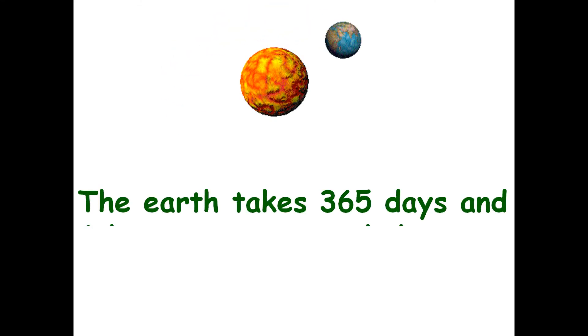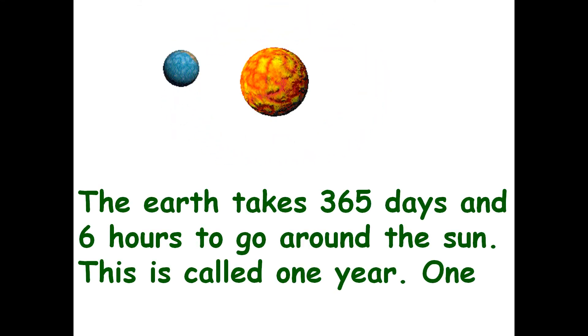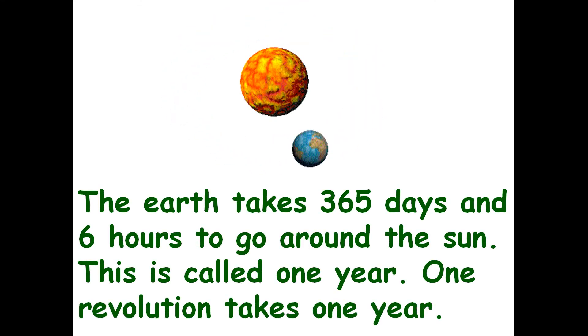The earth takes 365 days and 6 hours to go around the sun. This is called one year. One revolution takes one year.